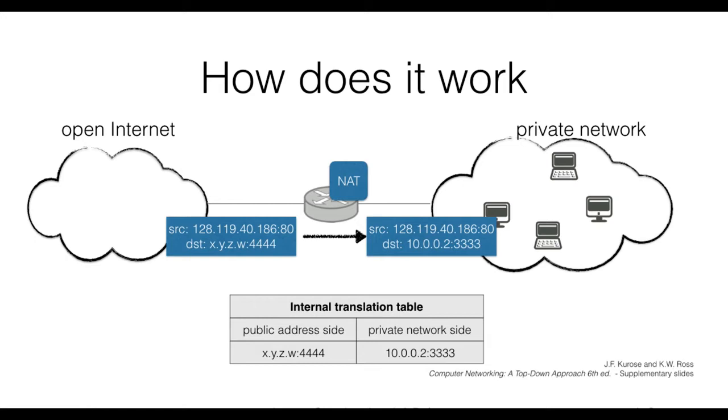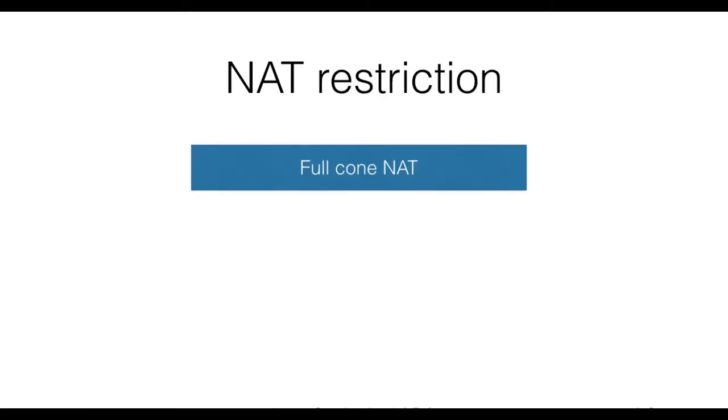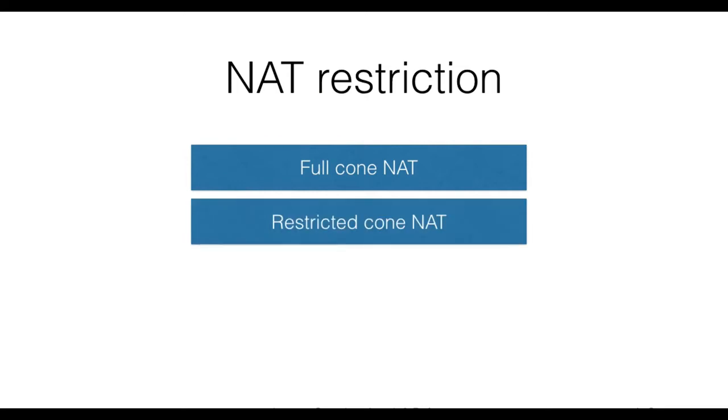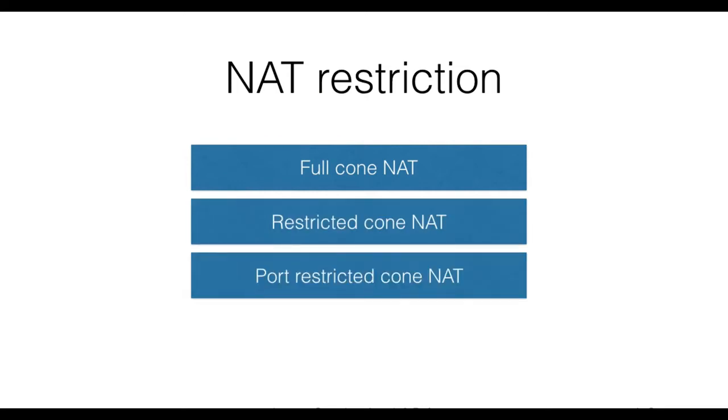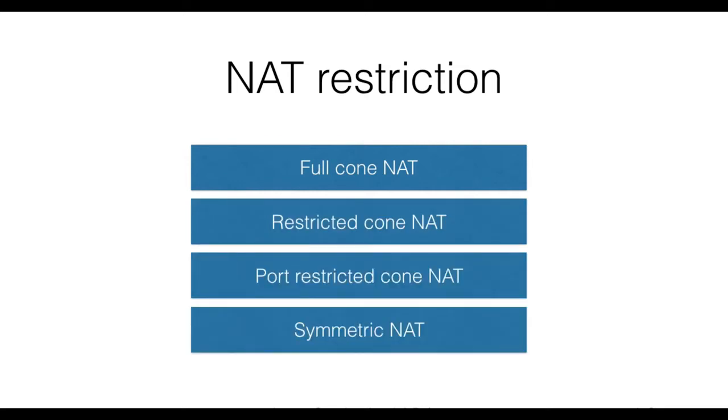Besides remapping IPs and ports, NATs also need to decide if an outgoing or incoming connection is allowed. Even though the overall mechanism of IP and port remapping remains the same, NATs implement several types of restrictions. We therefore have full cone NAT, restricted cone NAT, port restricted cone NAT, and symmetric NAT. Let's have a look at each one of them.